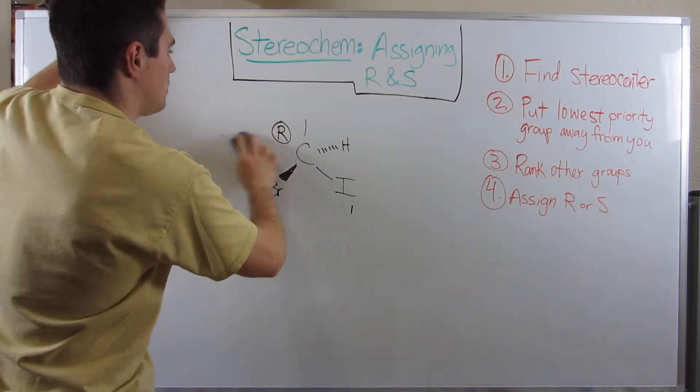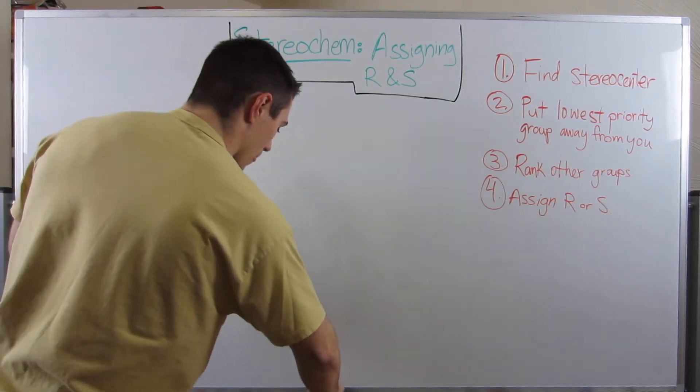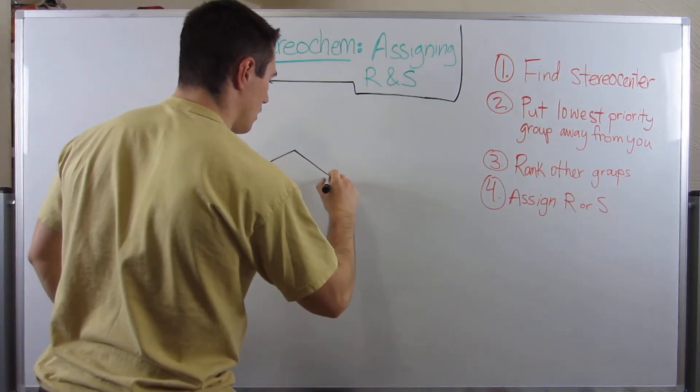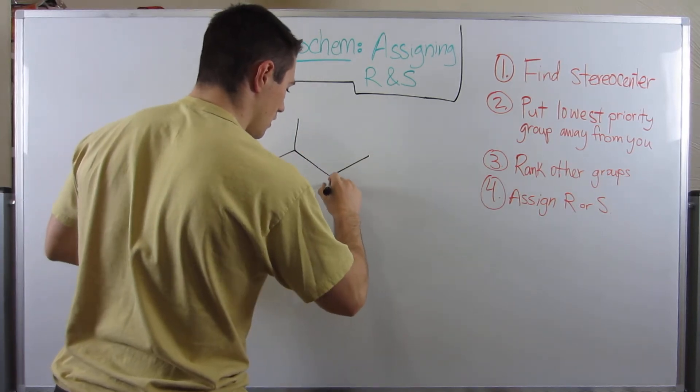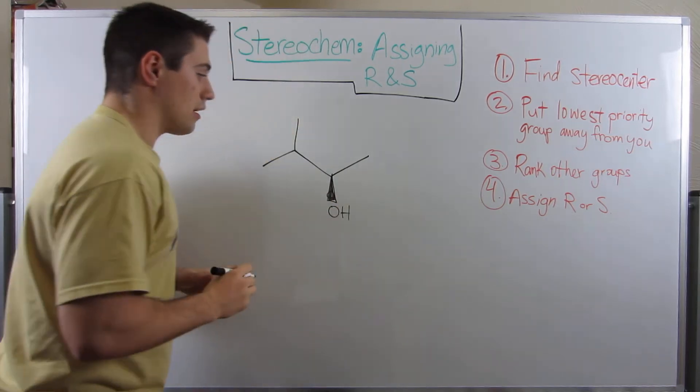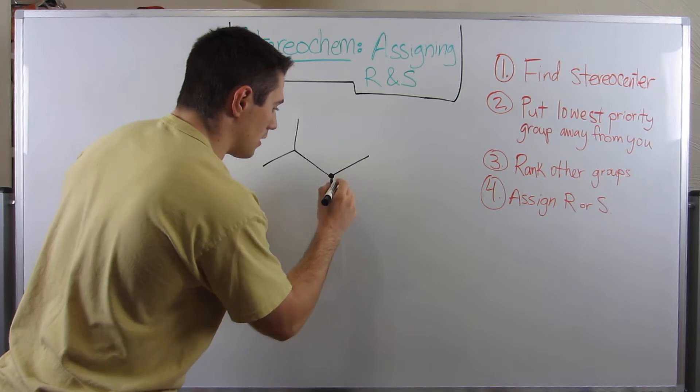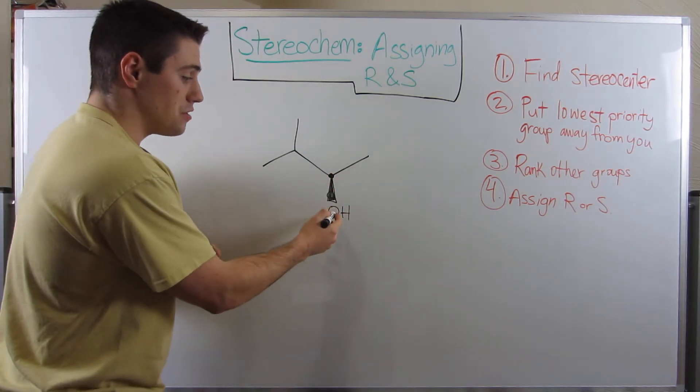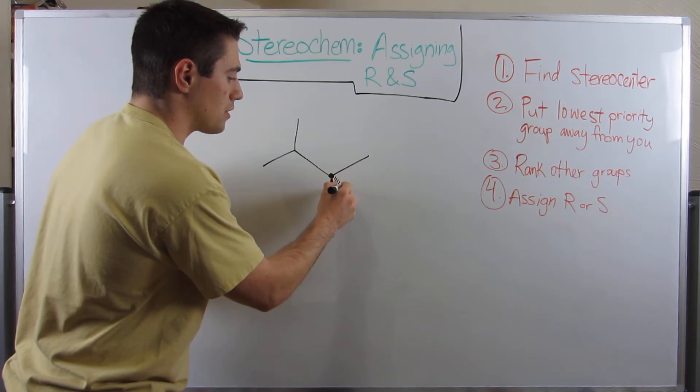Okay. So now let me kind of show you another example. Okay. So there's one stereocenter in this molecule and he is right here. Because we have a wedged OH group, a wedged alcohol group, I'm going to draw on the implied hydrogen.